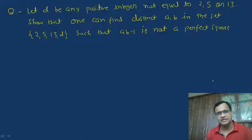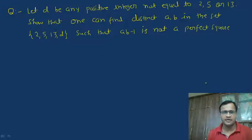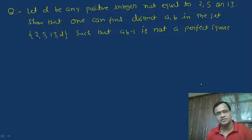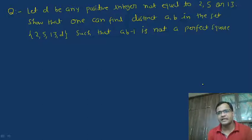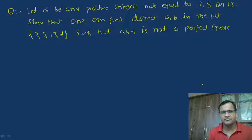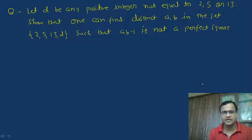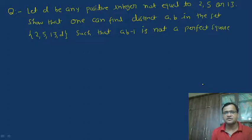Hello everyone. In this lecture I am going to solve the 1986 IMO problem number 1. The problem has been already written on the slide and this is a problem based on number theory. We are given a positive integer d which is not equal to any of 2, 5, or 13, and we have to show that one can find distinct a, b in the given set having 4 elements — 2, 5, 13, and d — such that ab minus 1 is not a perfect square.